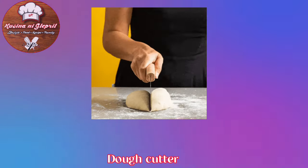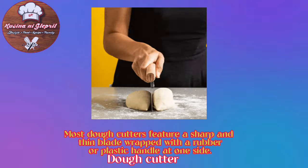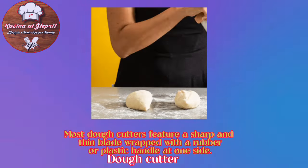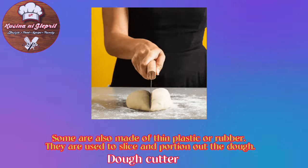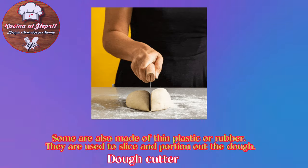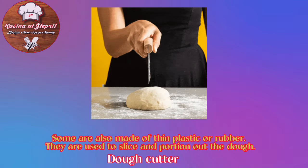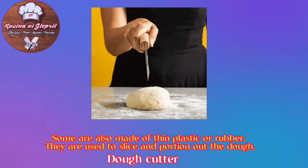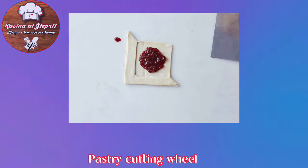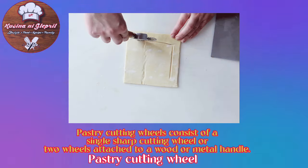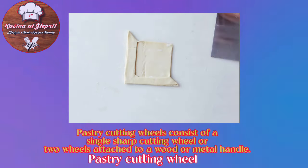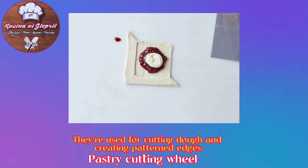Dough Cutter: Most dough cutters feature a sharp, thin blade wrapped with a rubber or plastic handle on one side. Some are also made of thin plastic or rubber. They are used to slice and portion out the dough. Pastry Cutting Wheel: Pastry cutting wheels consist of a single sharp cutting wheel or two wheels attached to a wood or metal handle, used for cutting dough and creating patterned edges.